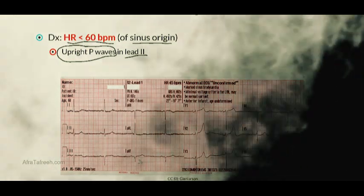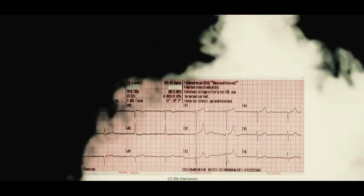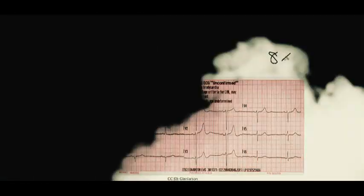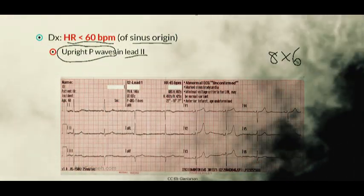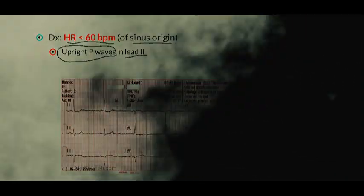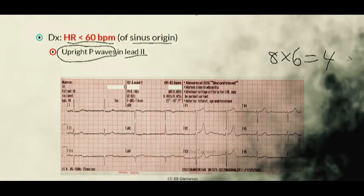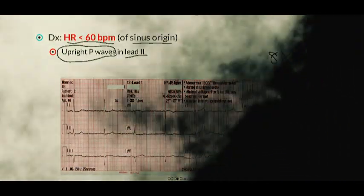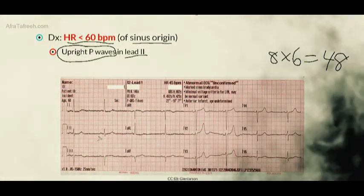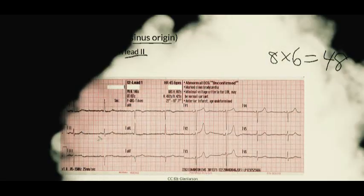On this particular EKG strip, assuming it lasts 10 seconds, we count 8 QRS complexes. Because this is a 10-second strip, we multiply by 6 to get the number of beats per 60 seconds — 8 times 6 gives us 48 beats per minute. This confirms the patient is bradycardic. Looking at lead 2, the P waves are upright, making this a classic EKG for sinus bradycardia.